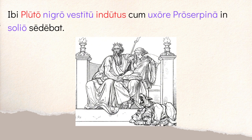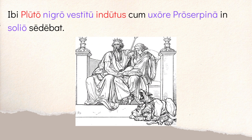It continues: 'ibi Pluto nigro vestitu indutus cum uxore Proserpina in solio sedebat.' There — 'ibi' — Pluto, dressed in black clothing — 'nigro vestitu indutus' — was sitting — 'sedebat' — with his wife Proserpina — 'cum uxore Proserpina' — on a throne — 'in solio.' So you get this image of Hades or Pluto and his wife Proserpina on their throne, dressed in black, with Cerberus nearby.